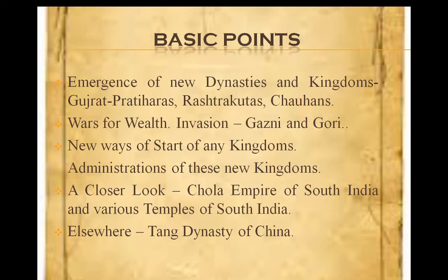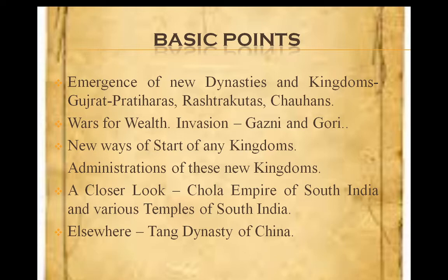In this chapter, we will learn basic points like emergence of new dynasties and kingdoms, that is how royal families came up. We will learn about Gurjara Pratiharas, Rashtrakutas, and Chauhans. Then we will learn how wars used to happen for wealth, about Mohammed Ghazni and Mohammed Ghori's invasions, and how new kingdoms were administered. In a closer look, we will study the Chola dynasty in South India, and in elsewhere, China's Tang dynasty.